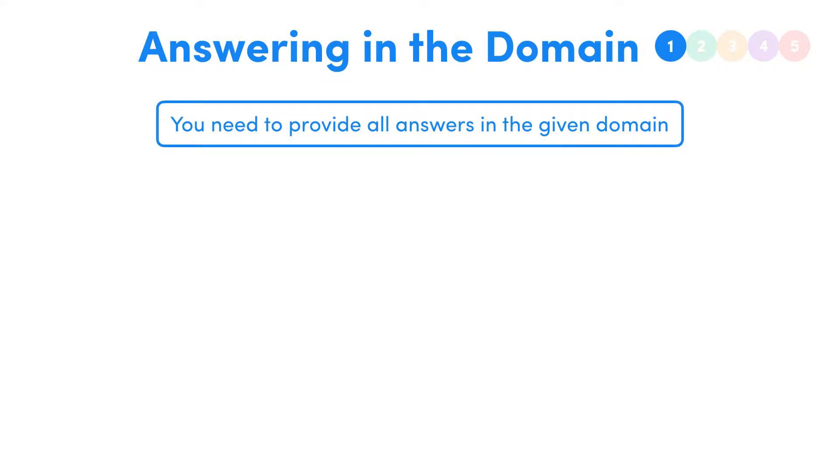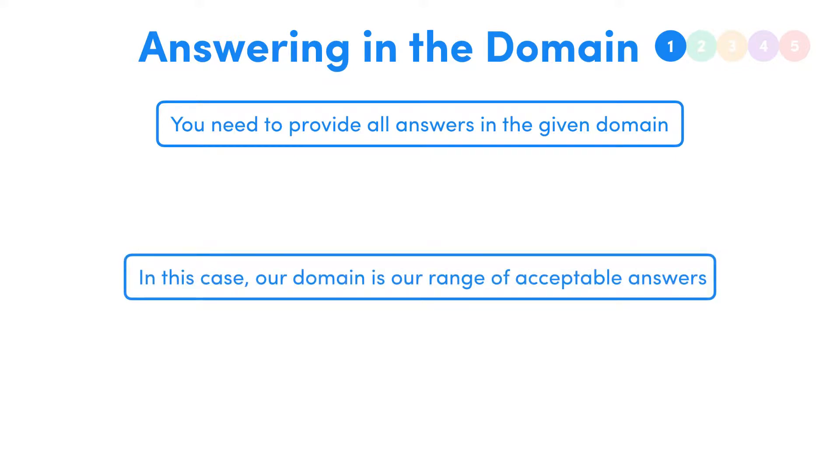A domain is like a range of values that we care about. Because trig graphs go on forever, we might get an infinite number of answers, but obviously we don't care about every single answer, we only care about the ones in a specific range that we're worried about.